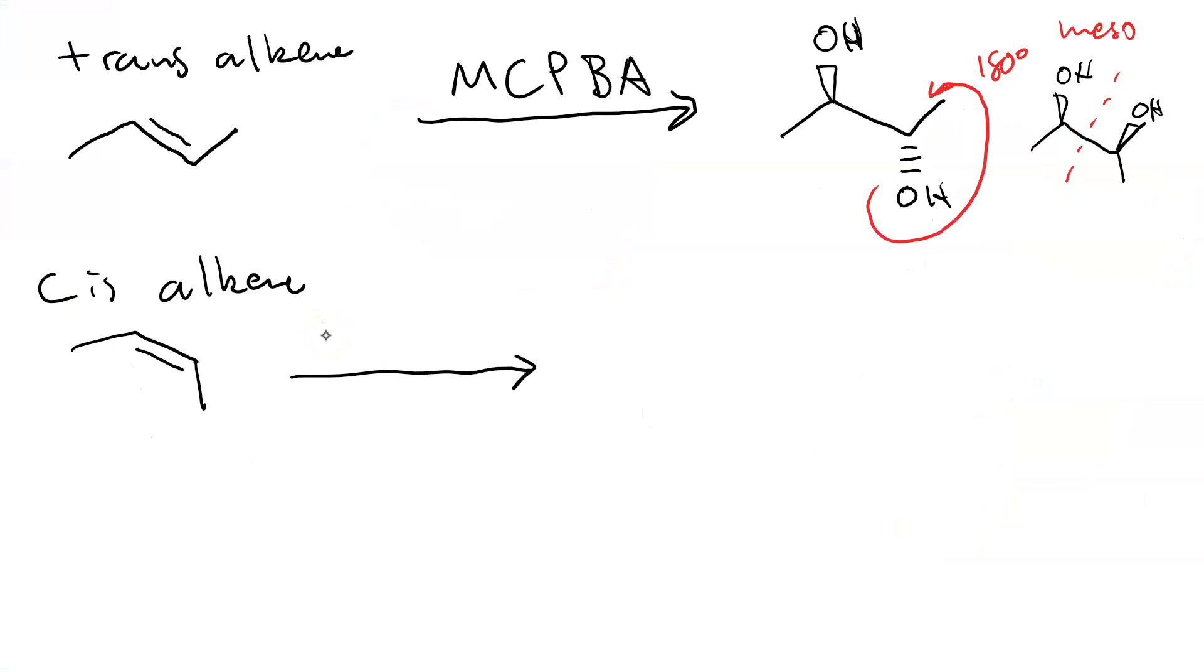However, if you react a cis-alkene with MCPBA, or any other peroxyacetic acid, you end up with the following result.